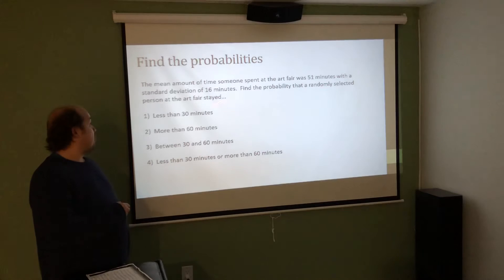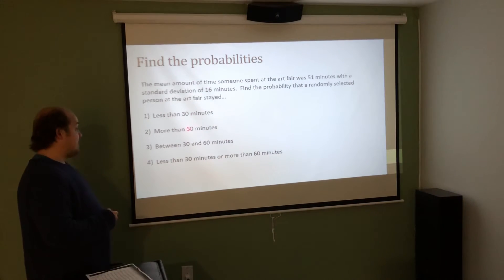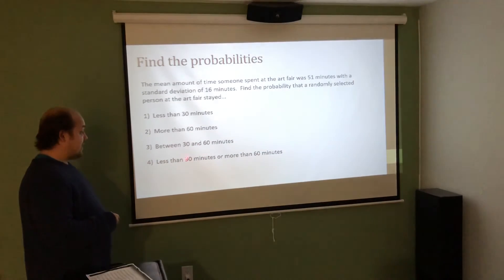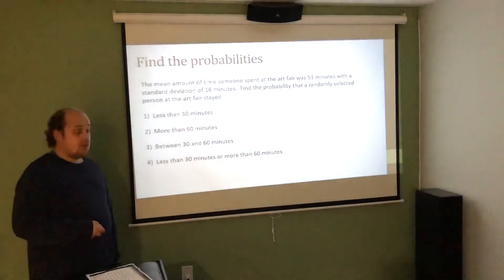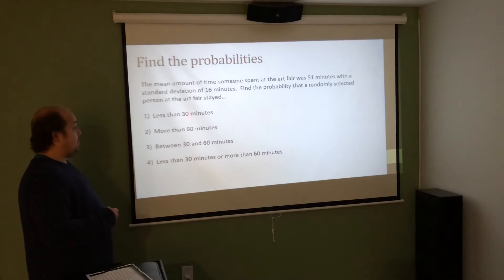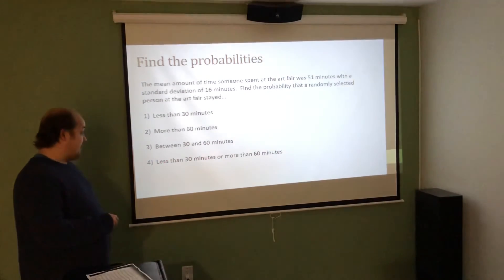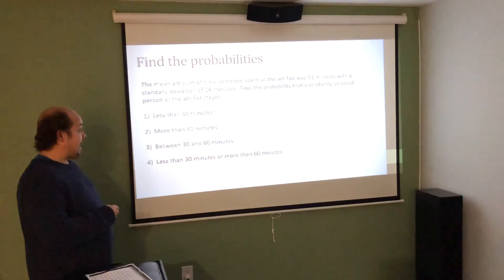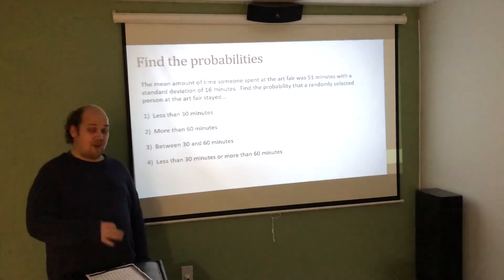This is a new prompt where we're told the mean amount of time someone spent at the art fair was 51 minutes with a standard deviation of 16 minutes. Find the probability that a randomly selected person at the art fair stayed less than 30 minutes, more than 60 minutes, between 30 and 60 minutes, or less than 30 minutes or more than 60 minutes. So we're going to start off with less than 30 by putting into the z-score formula 30 minus the given mean of 51 divided by the given standard deviation of 16. We're then going to do it for 60. The between question, you know how to do. The less than 30 or more than 60, we're going to see we can get to either by adding the first two answers or by doing 1 minus the third answer. Again, I would pause here. Try this on your own.